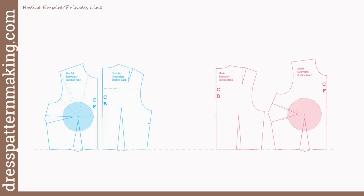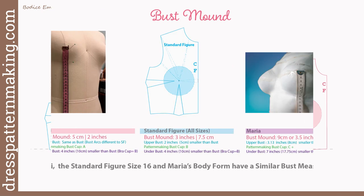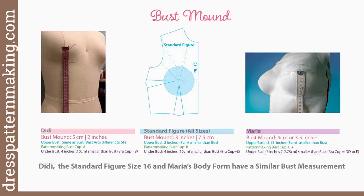Let's start drafting the empire and princess line bodice. I'm using the sleeveless block; the steps would be the same for a sleeved block, but I'm not covering sleeves until video seven. I'm also not starting with a fashion flat because at the moment I'm not drafting a particular style — this is general information. Since the empire line finishes under the bust, you need your bust mound measurement, which was covered in the contouring video.